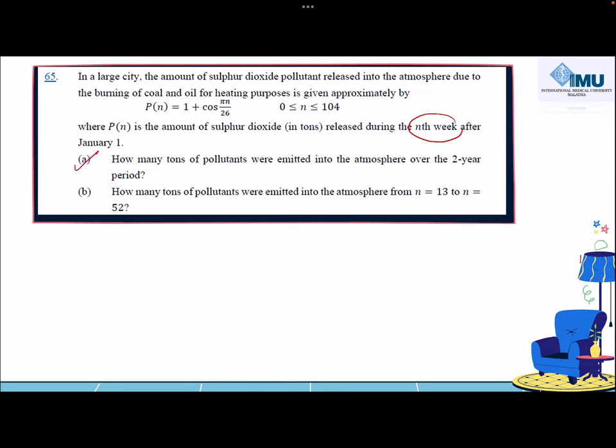Now let's try to do part A together. How many tons of pollutant were emitted into the atmosphere over the 2 year period? Before that, let's convert 2 years into weeks. 1 year is equivalent to 52 weeks.